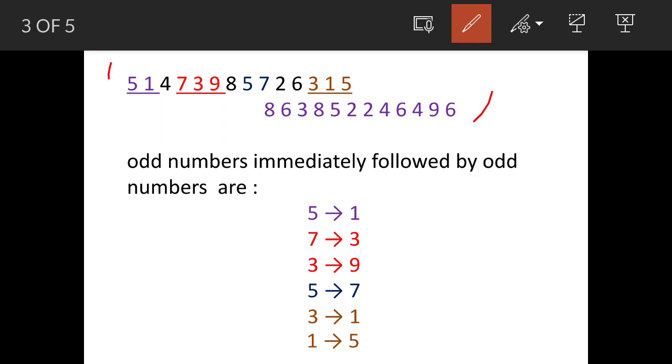We'll identify the pairs: first one is 5→1, second one is 7→3, third one is 3→9. You can see that 5 is followed by 1, 7 is followed by 3, and 3 is followed by 9.